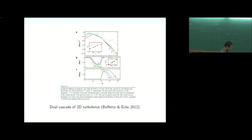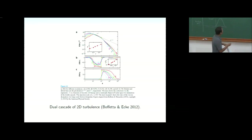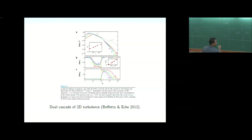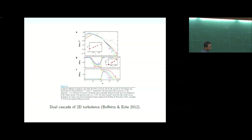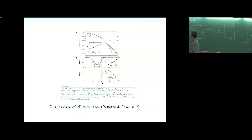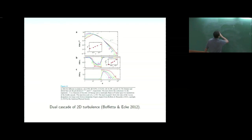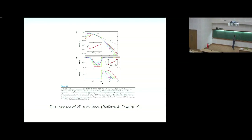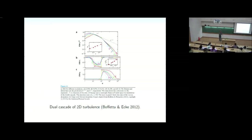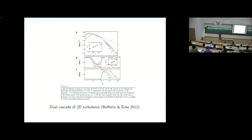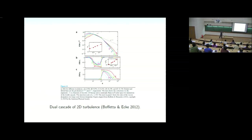Now the question is: what happens if we move from a pure 2D system to a QG system? Note that in 2D turbulence there is no anisotropy — the coherent structures are perfectly isotropic with no preference for x or y. The question is whether this isotropy is broken by QG.